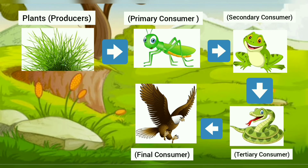The final consumer in our example is a hawk. The final consumers are always predators.